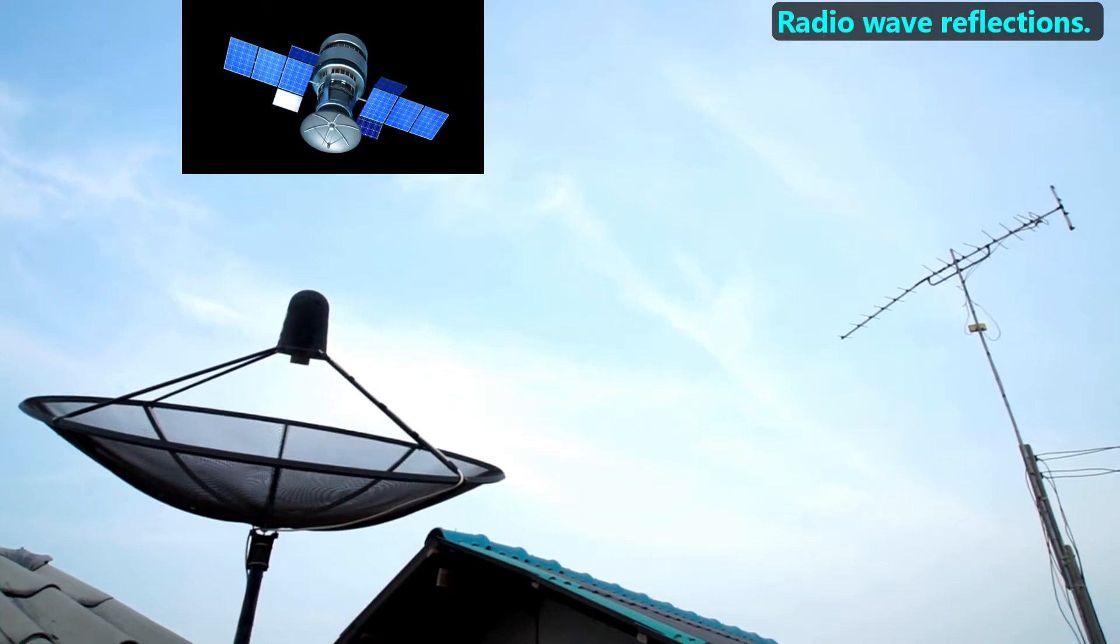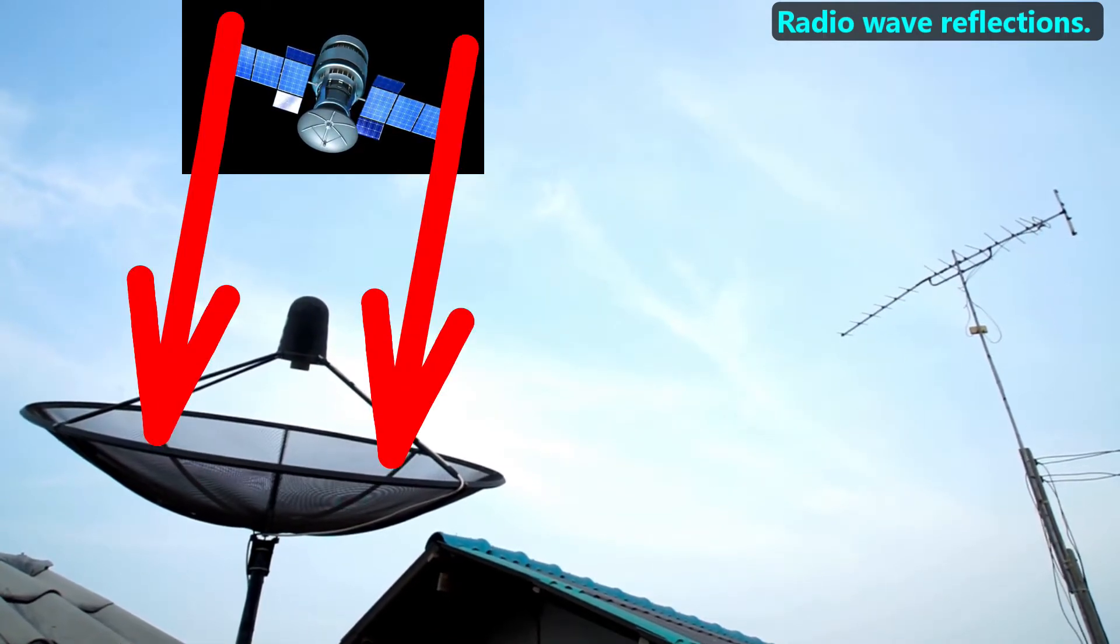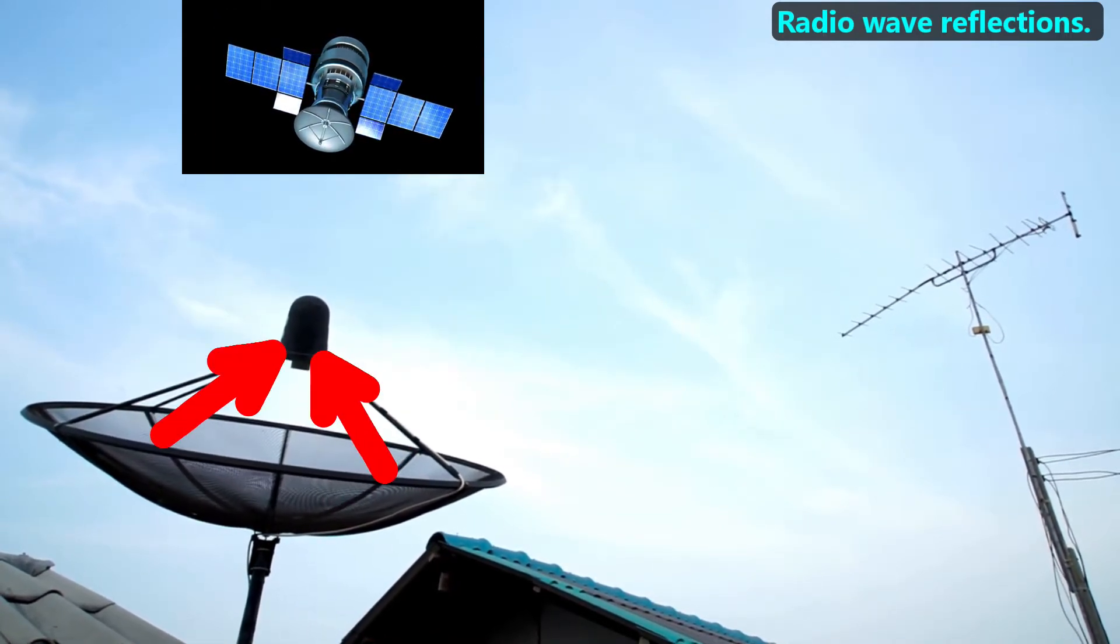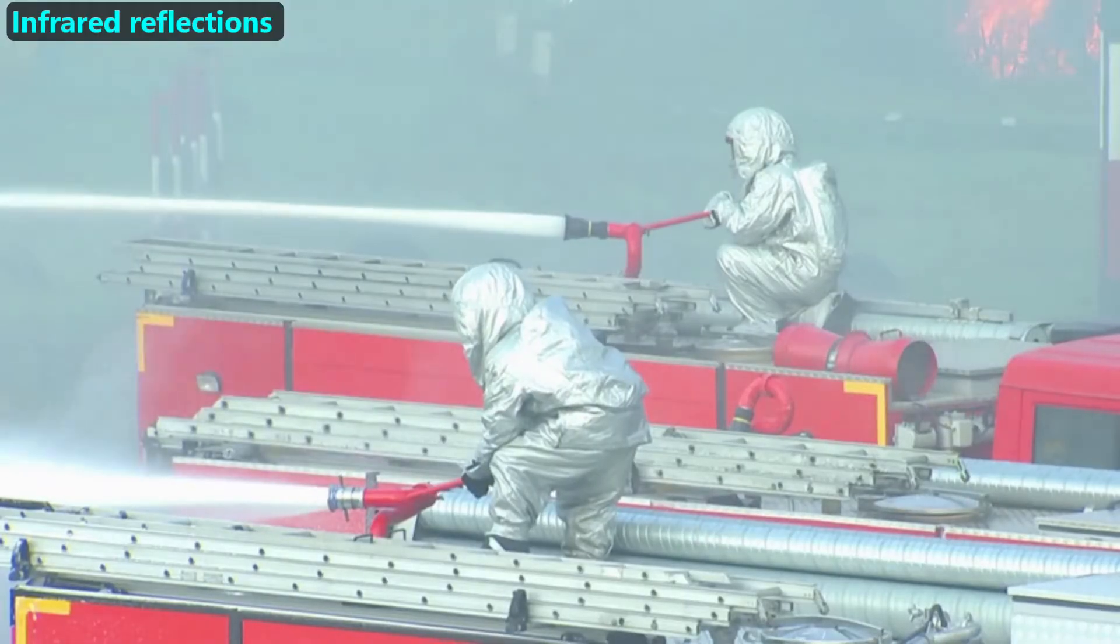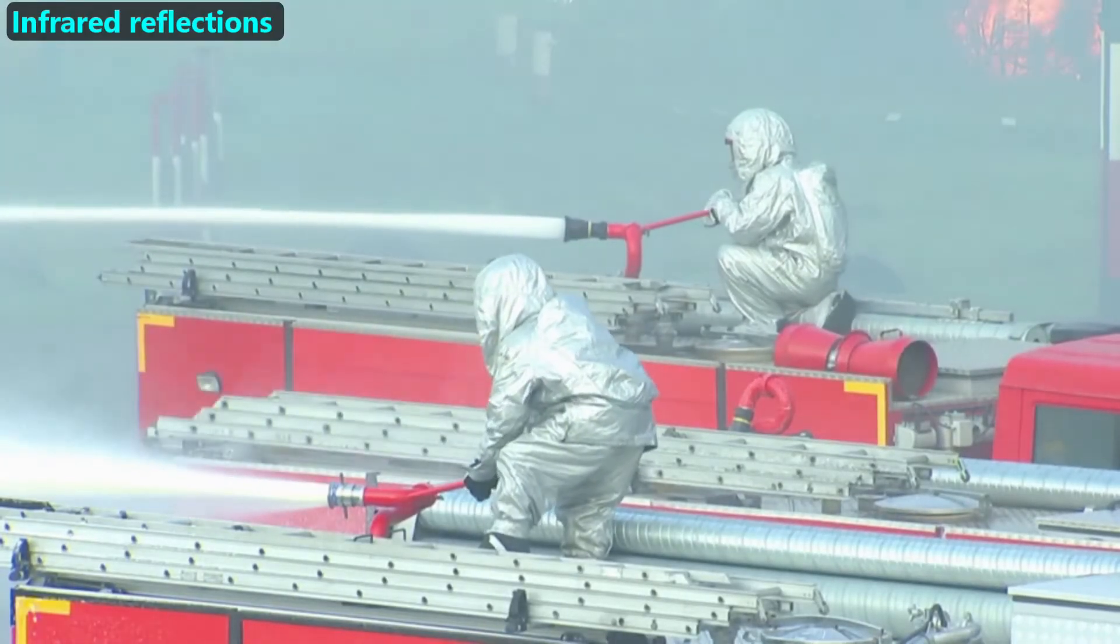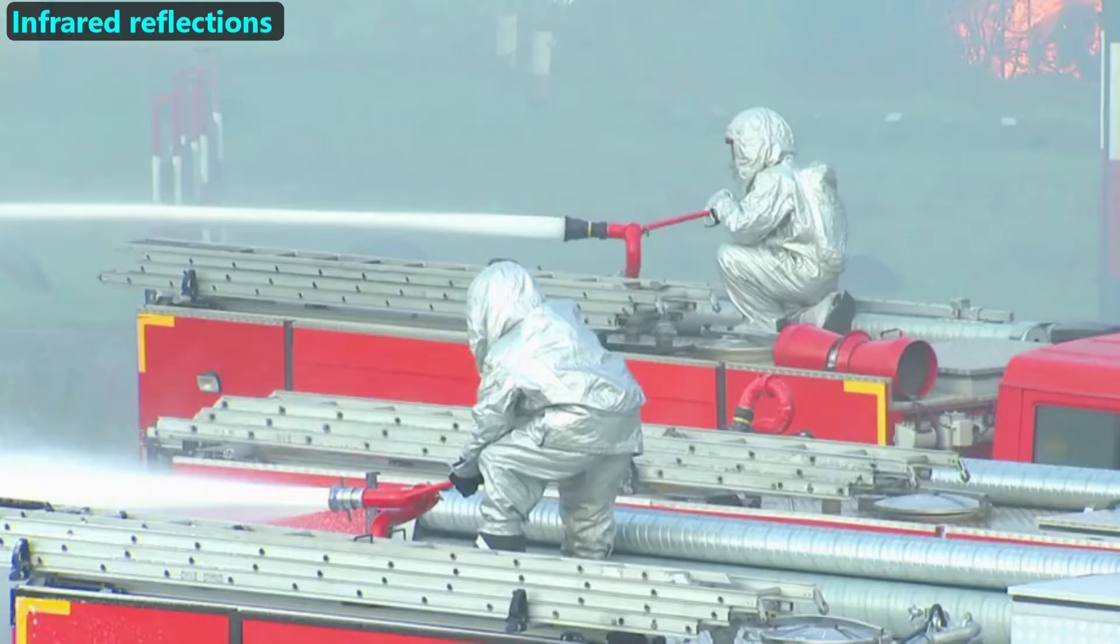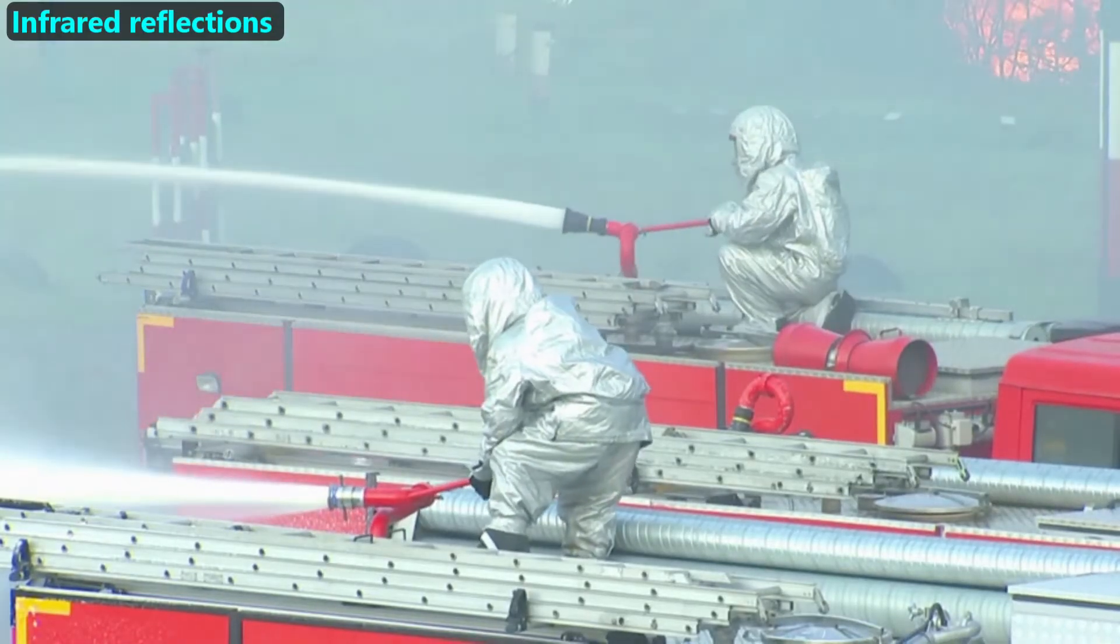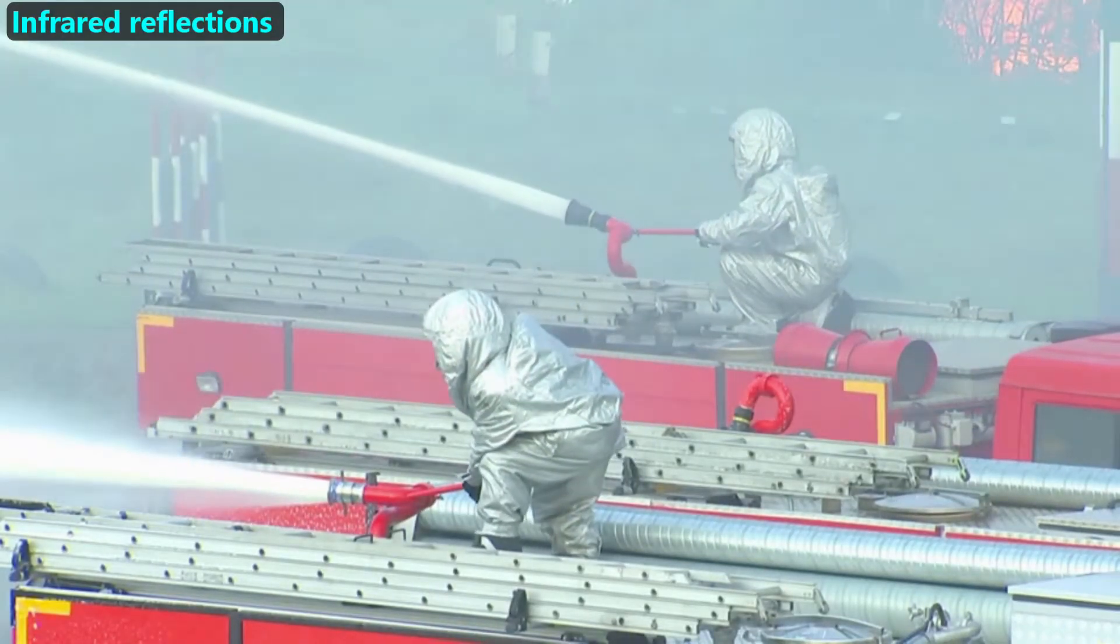This satellite dish has a concave shape. It's designed to reflect radio waves from satellites towards the sensor. These suits reflect infrared waves away from the firefighters. Since infrared waves carry heat, these suits help prevent the firefighters from getting too hot.